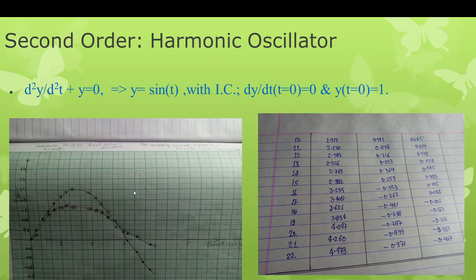For the second-order harmonic oscillator, the equation is d²y/dt² + y = 0. The solution with initial conditions dy/dt at t=0 equal to 1 and y at t=0 equal to 0 gives y = sin(t). Plotting the reading on a graph, the theoretical and experimental characteristics are nearly equal with some variation due to the second-order limitations, which will be discussed in the next slide.